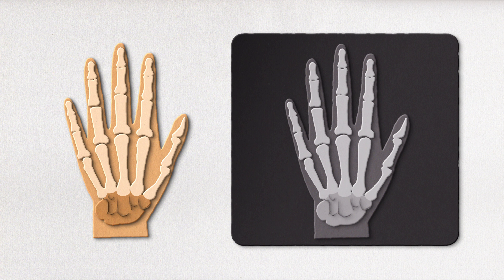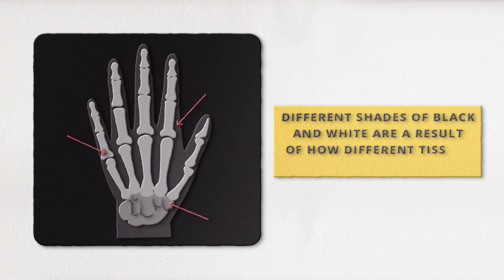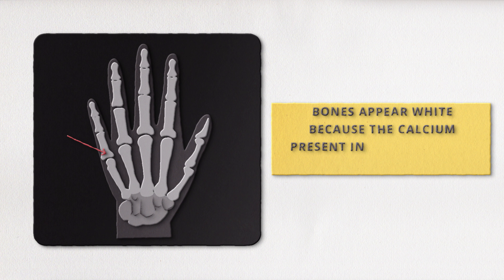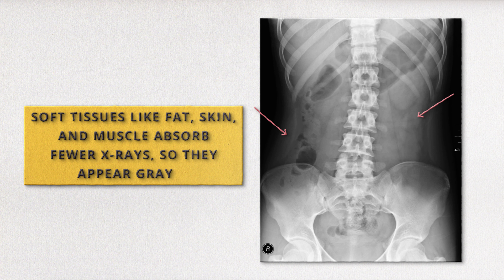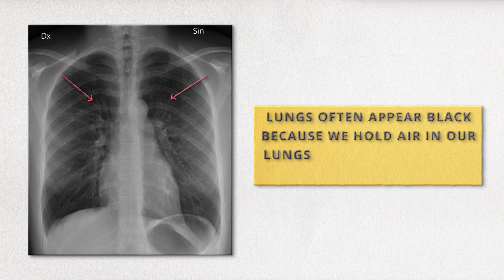But how can you photograph the inside of the human body? How is this image created? The different shades of black and white are a result of how different tissues absorb radiation. For example, bones appear white because the calcium present in bones absorbs the highest amount of x-rays. Soft tissues like fat, skin and muscle absorb fewer x-rays, so they appear grayer. In chest x-rays, the lungs often appear black because we hold air in our lungs, and air absorbs the least amount of x-rays.